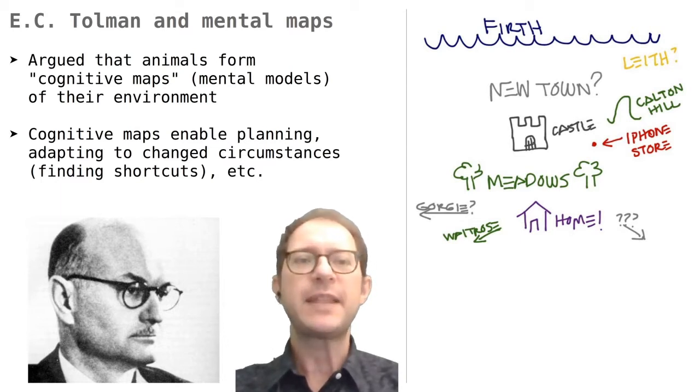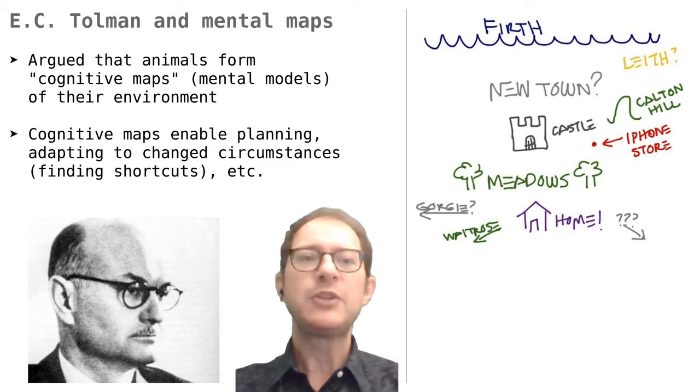We are essentially saying that the animal has a mental representation of the environment that it can use to find its way around. Based on the results of maze experiments, Tolman and others were persuaded that animals do, in fact, have these cognitive maps.